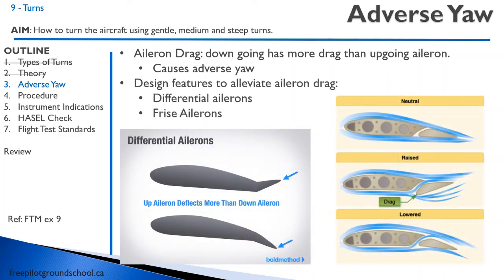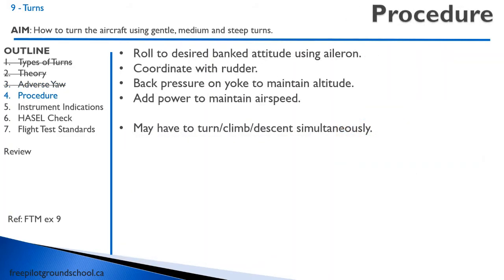There are design features that aircraft manufacturers incorporate to counteract adverse yaw caused by aileron drag. First are differential ailerons, where the down-going aileron does not deflect downward as far as the up-going aileron deflects upward. This creates more drag on the down-going wing, helping the aircraft yaw in the direction of the turn. Second are Frise ailerons, which have a tab such that the up-going aileron deflects further into the airstream. Next time you do a walk-around on a training airplane, ask your instructor to point out what kind of ailerons your aircraft has.